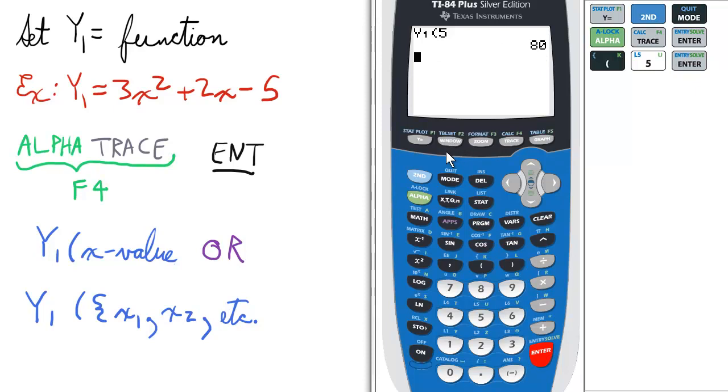Now if we want to select multiple values, we just repeat the process at the beginning. So press alpha, trace for f4. Enter for y1.